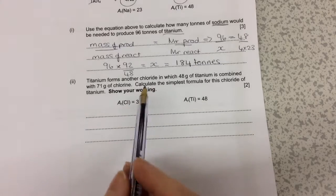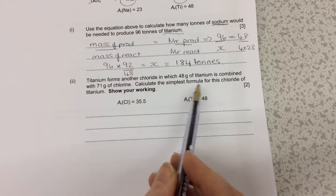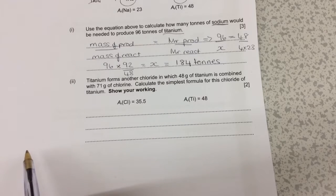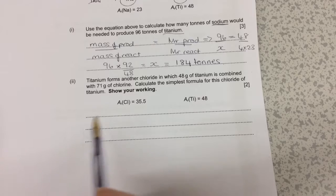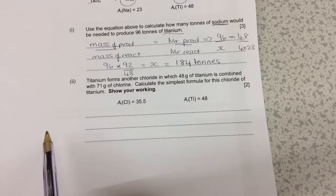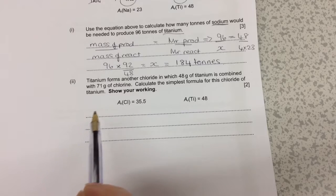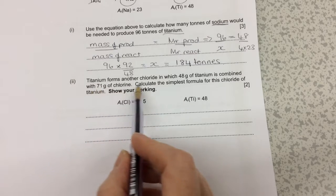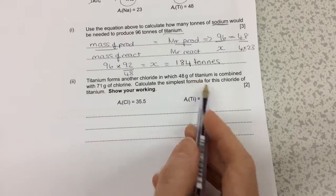This question is how to calculate the simplest formula for a compound. To do this, we're going to read the question to find out the elements present in the compound. From the question we can see that titanium and chlorine are present.